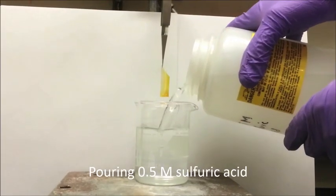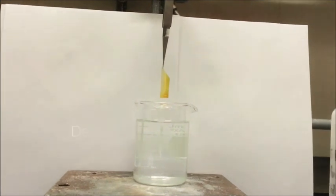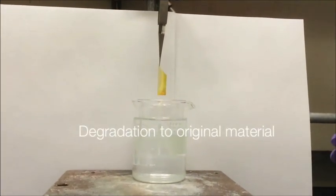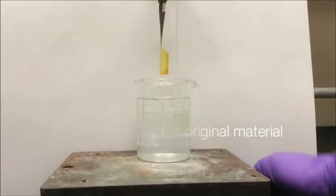A strong polyhexahydrotriazine, or PHT, film was cured at high temperatures, around 200 degrees Celsius, and cut into a rectangular shape.